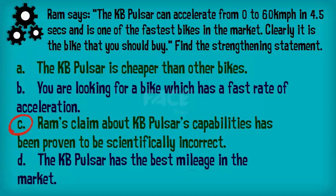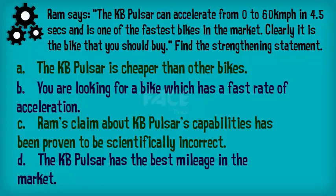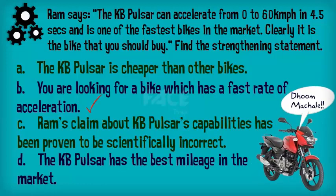Option C weakens the argument — if Ram's claim has been proven to be incorrect, then clearly it cannot be the bike you should buy, and hence can be eliminated. Look at option B: 0 to 60 km per hour in 4.5 seconds is a fast rate of acceleration, thus KB Pulsar has a fast rate of acceleration. Only if you are looking to buy a bike with a fast rate of acceleration will you consider the KB Pulsar. Thus, option B is the strengthening statement.